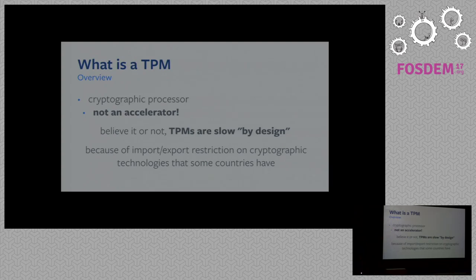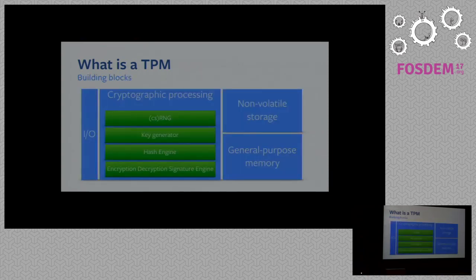TPM is a cryptographic processor, but it is not an accelerator. This could be shocking — believe it or not, it's slow by design. One of the main reasons why it is slow is because of import-export restrictions on cryptographic technology; some countries have this restriction, like the United States, for instance.